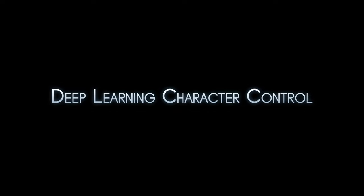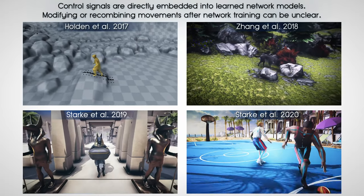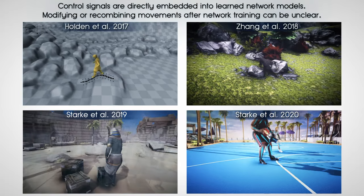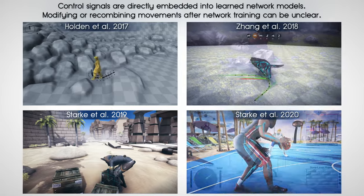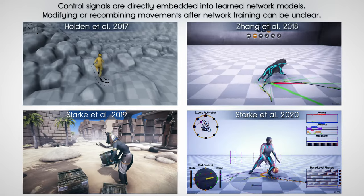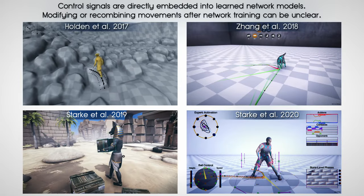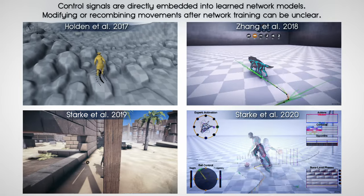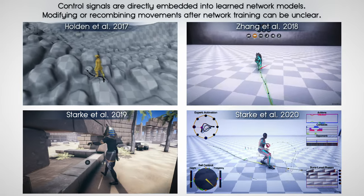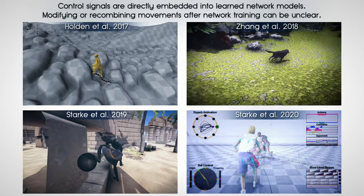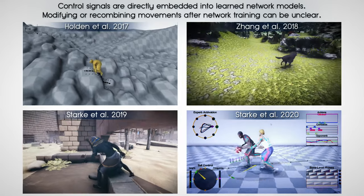Learned character controllers are able to produce high quality animations. However, finding suitable control signals can be a challenge, and recombining or modifying movements after network training is rather unclear.